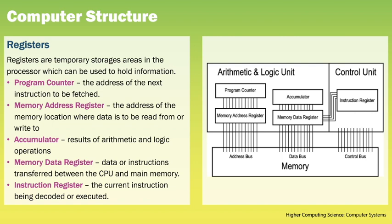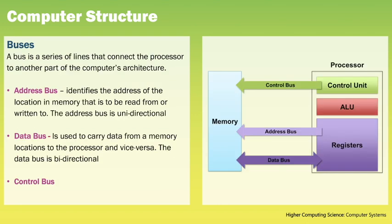The connections between the processor and main memory are called buses, and there are three different buses. The address bus identifies the address of the location in memory to be read from or written to. The data bus transfers data to and from the address held in the address bus. The amount of data that can be carried across the data bus depends on the word size, which describes the width of the data bus. Most modern processors have a word size of 64 lines, allowing 64 bits to be transferred along the address bus each cycle. The last bus, which manages the others, is the control bus.